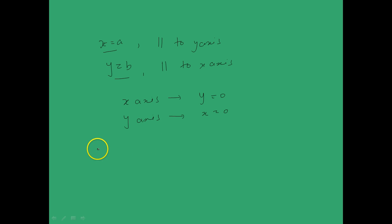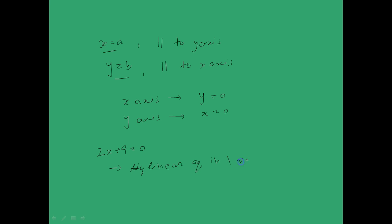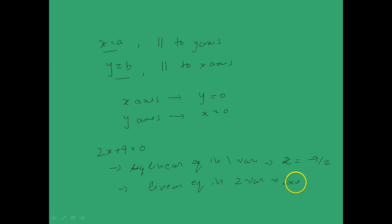Another thing to keep in mind: an expression like 2x plus 9 equal to 0 can be expressed as a linear equation in one variable, in which case it looks like x equal to minus 9 by 2, or it can be given as a linear equation in two variables, in which case it looks like 2x plus 0 times y plus 9 equal to 0. Adding 0 into y doesn't make a difference, but this is how you represent it as a linear equation in two variables.